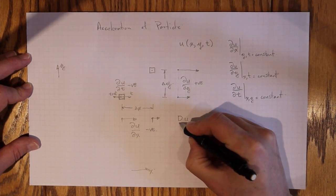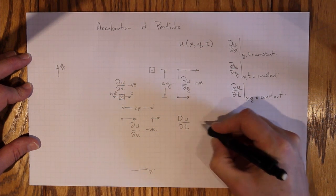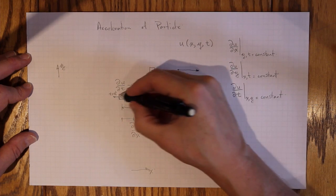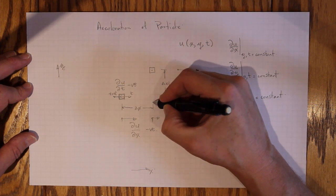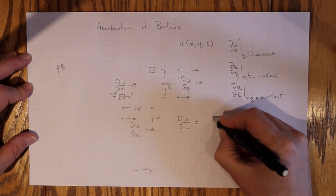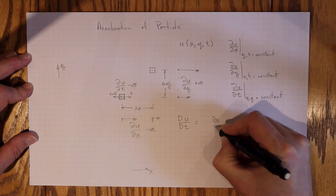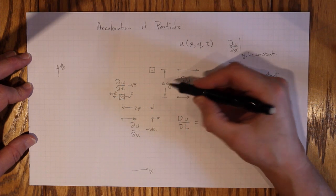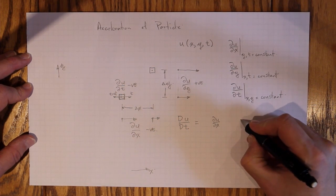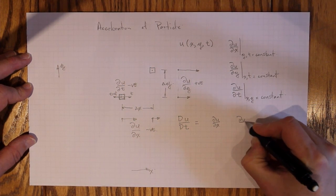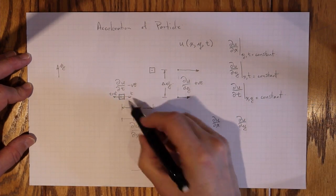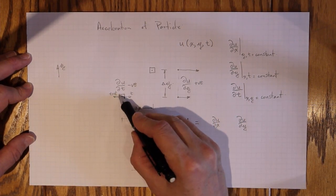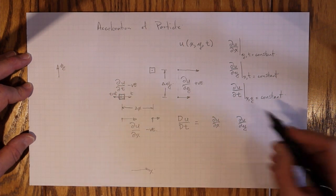Du/Dt is going to depend on how much change it undergoes because it moves in the x direction. So there will be a ∂u/∂x term. How much change it undergoes because it moves in the y direction. So there will be a ∂u/∂y term. And how much change it undergoes because the whole fluid is changing. So even if it stayed in this location, there would be a ∂u/∂t term.